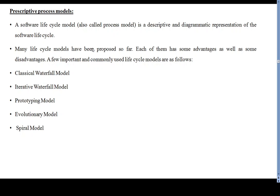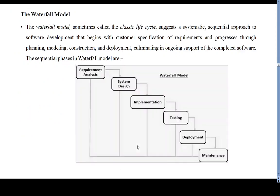A process model can be defined as an abstract representation of the software process. A software process model is also called a software life cycle model or Software Development Life Cycle (SDLC), or a software paradigm. These models are called prescriptive process models because they follow specific rules for correct usage, and various activities are carried out in a specific sequence. Types include: classical waterfall model, iterative waterfall model, prototyping model, evolutionary model, and spiral model.